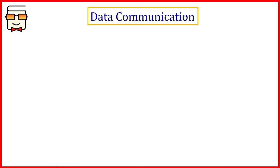Before starting and understanding data communication, let us first understand these two words independently — data and communication. Data refers to any kind of information that is present in either textual form, images, or in the form of audio, video, or any kind of information that is being sent or received over the network. That is what we mean by data in terms of computer networks.